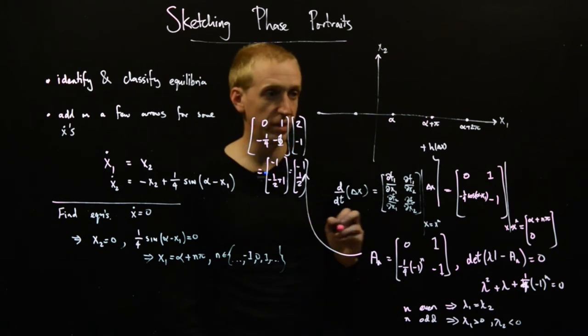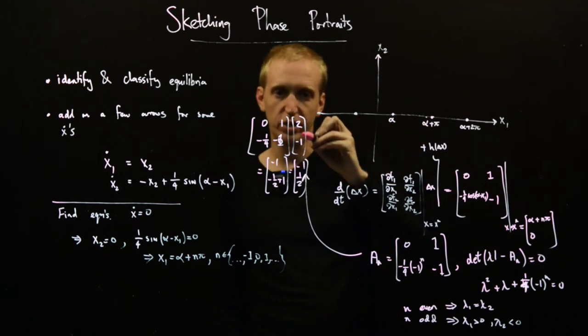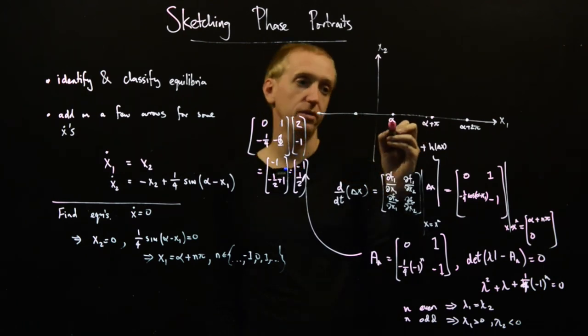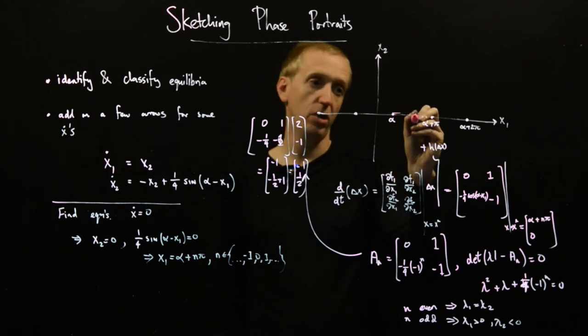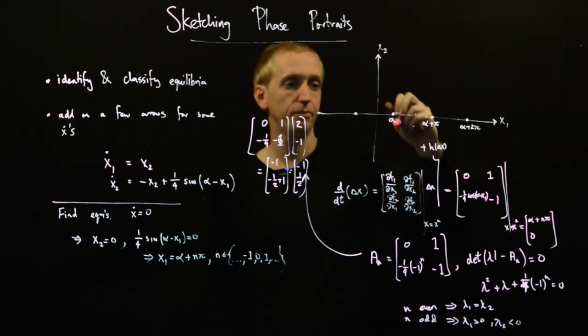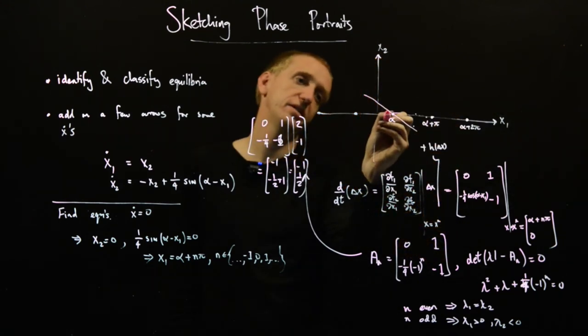And so what does that mean? Well, if we take our even equilibrium point, then we take the direction, which is 2 steps this way, but minus 1 steps down. And so our eigenvector looks something like that. It's stable.